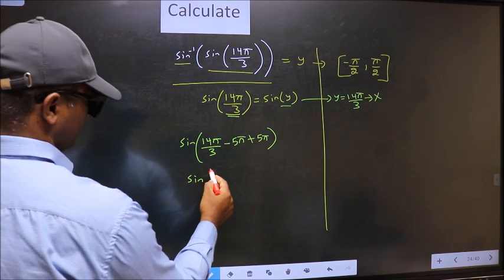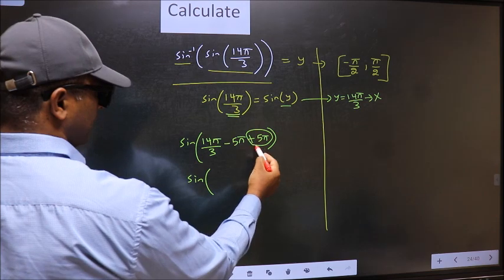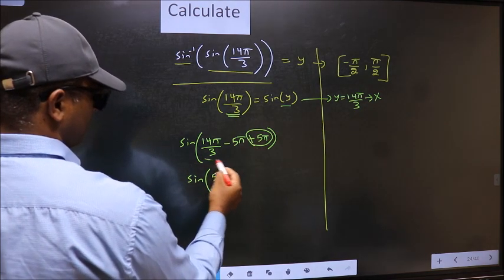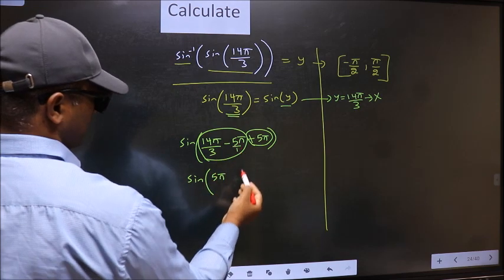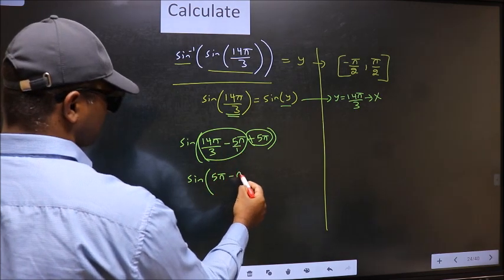sin 5π I write before. You calculate this. 14π by 3 minus 5π. We get minus π by 3.